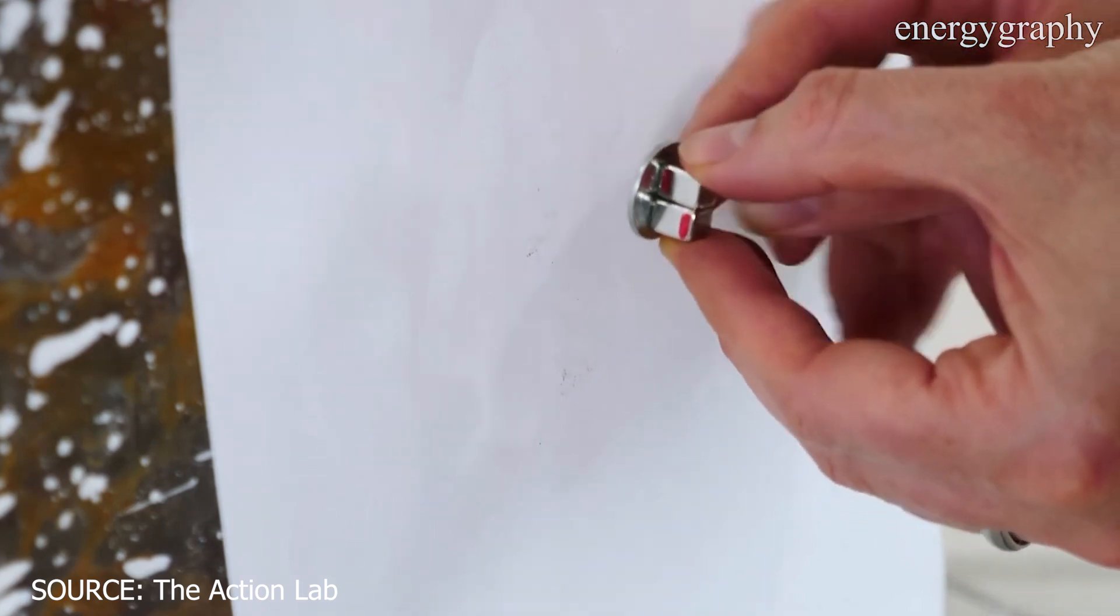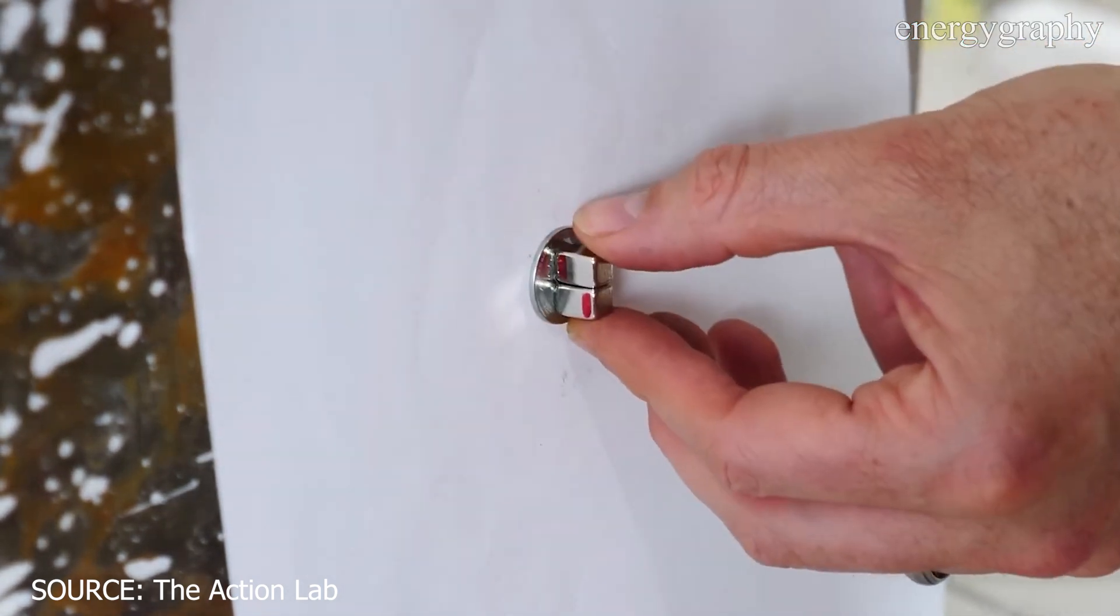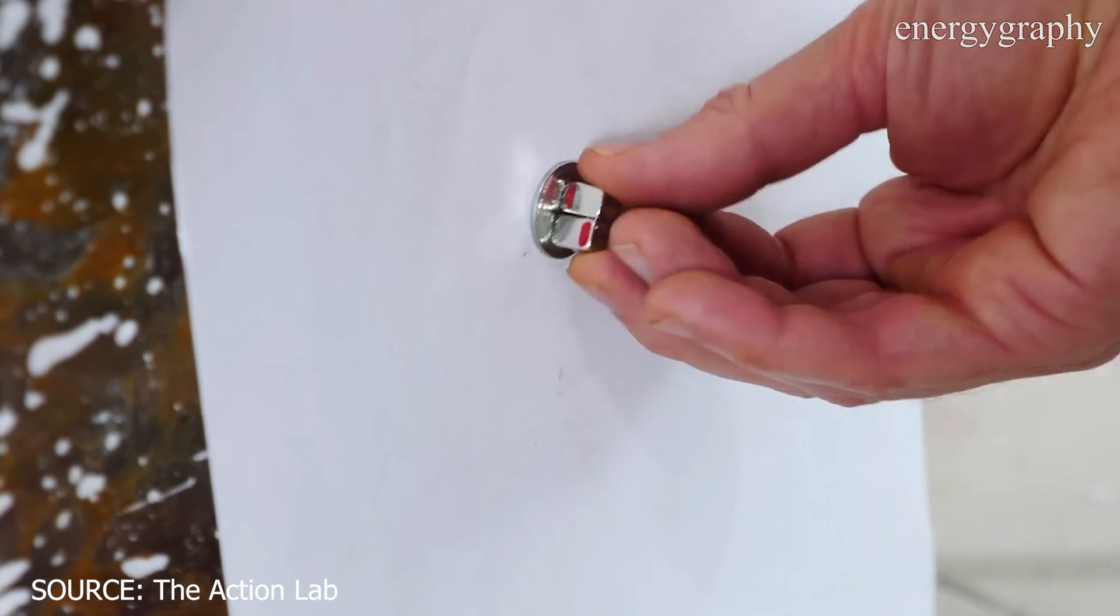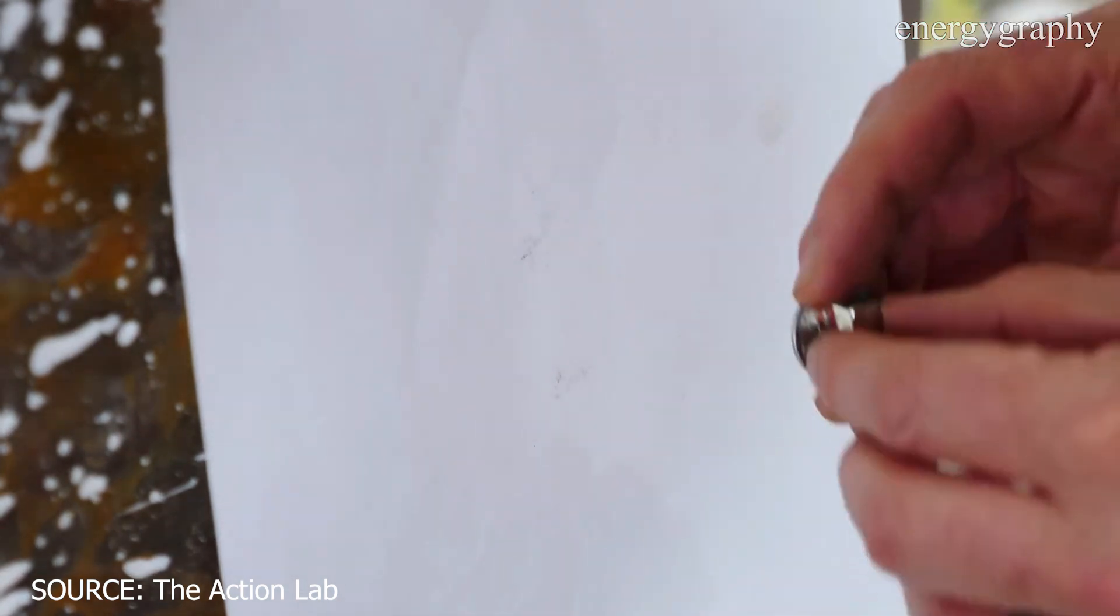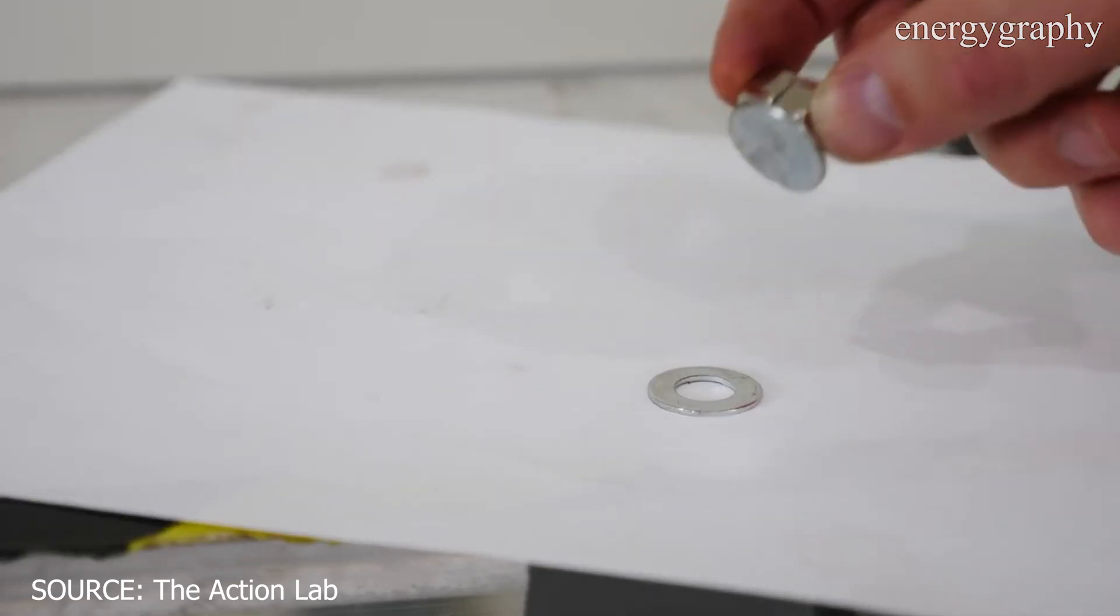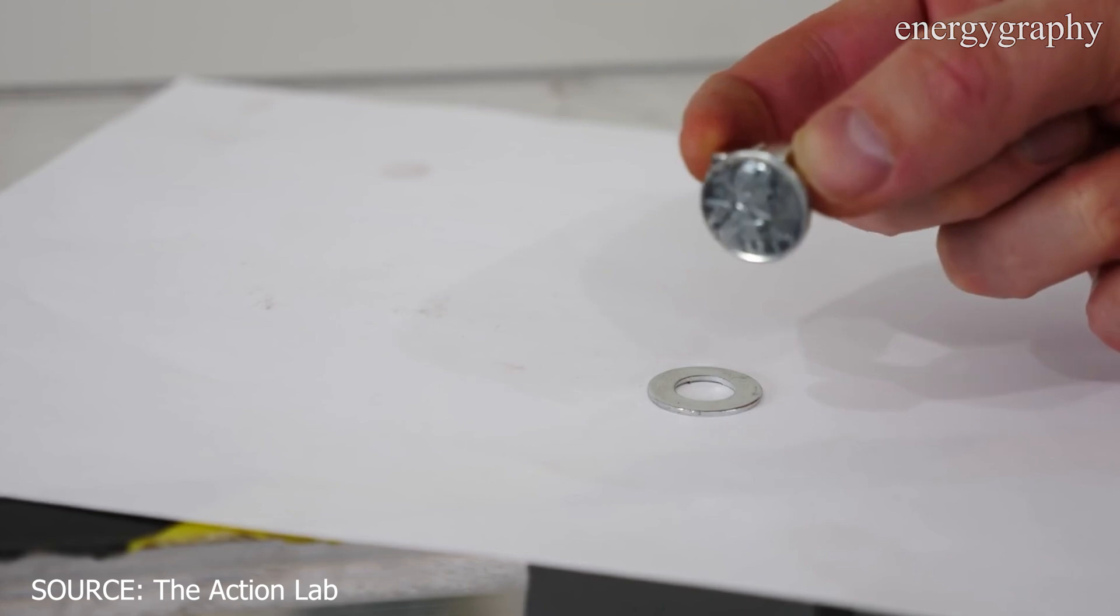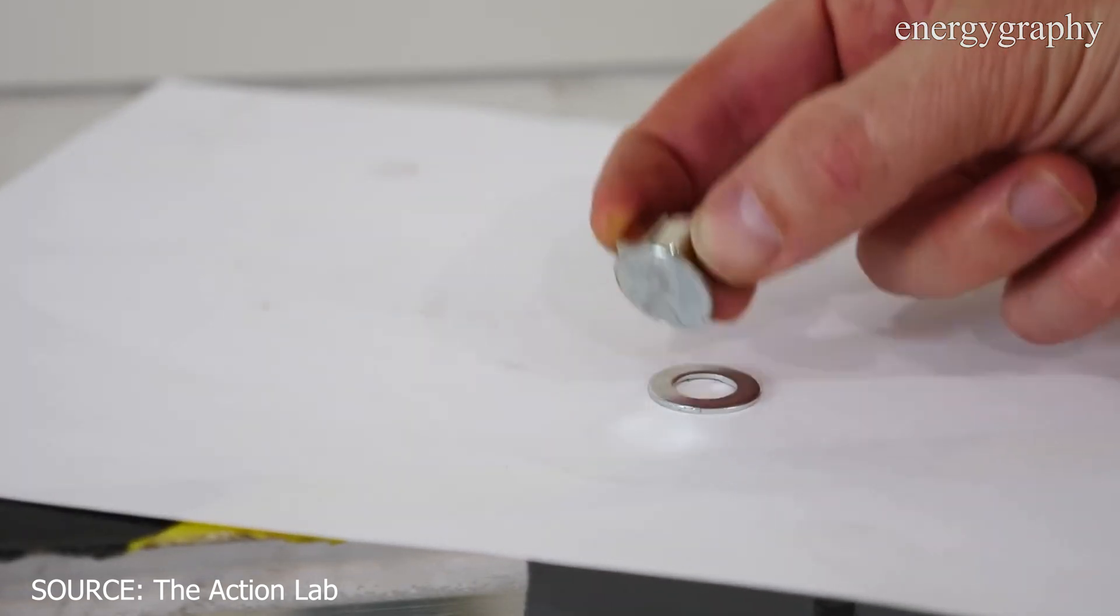When they are arranged to reinforce each other, the magnetic force is on. Conversely, when you change their alignment, the fields no longer add up, efficiently turning off the magnetic force.